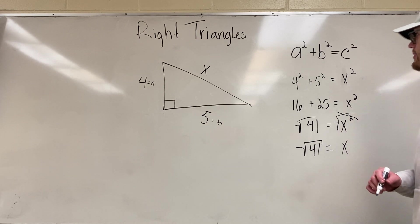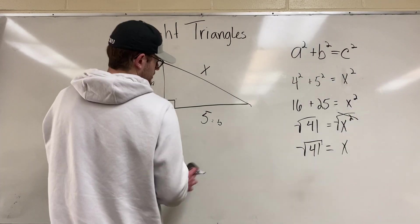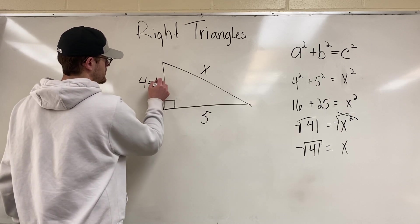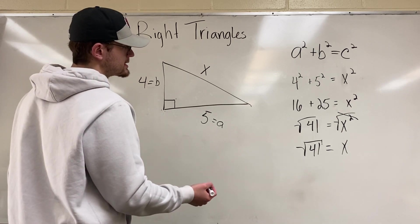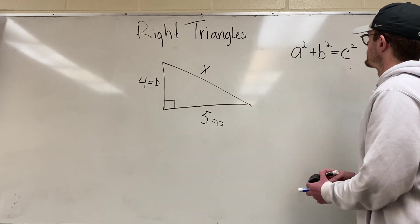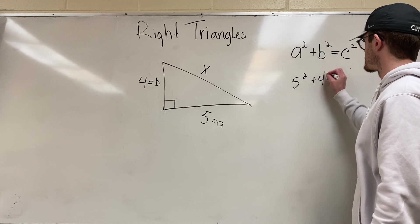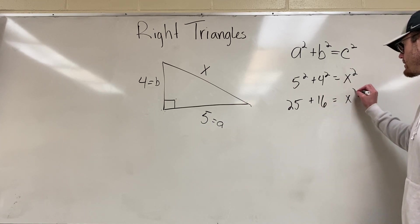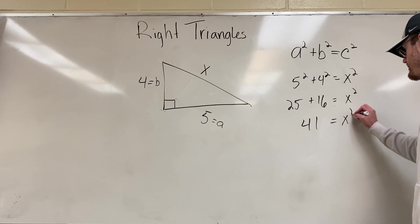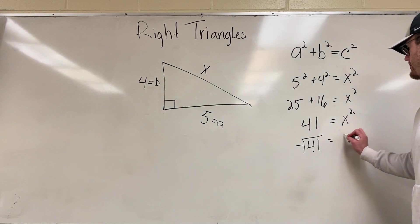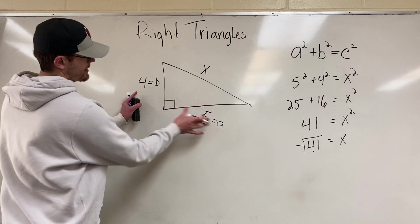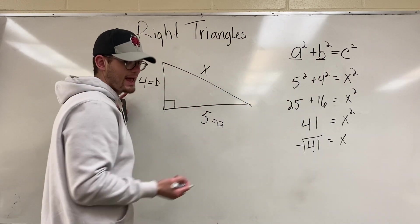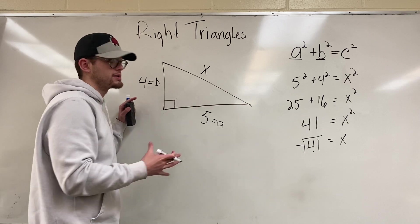Now I want to show you that it does not matter whether you make one leg a or b. Let's swap them — make this one b and this one a. Going through again: 5 squared plus 4 squared equals x squared — still get 25 plus 16, still get 41, still get x equals the square root of 41. It does not matter which leg you call a or b. Just remember those are the legs and c is the hypotenuse, the longest side.